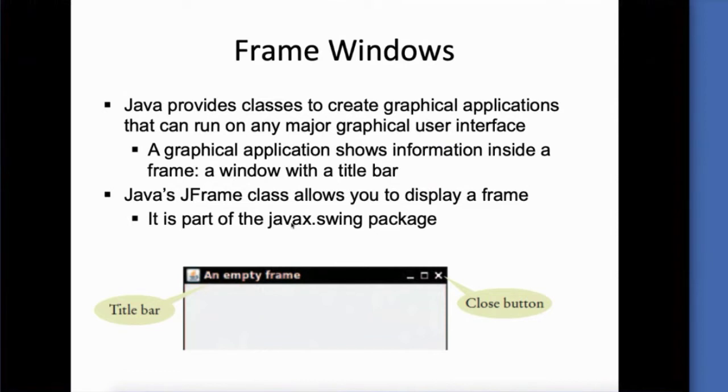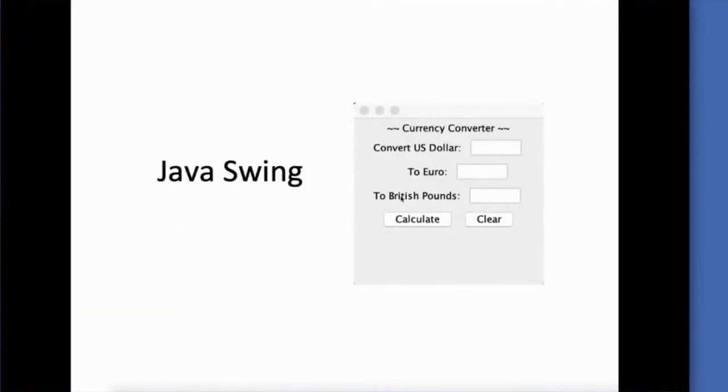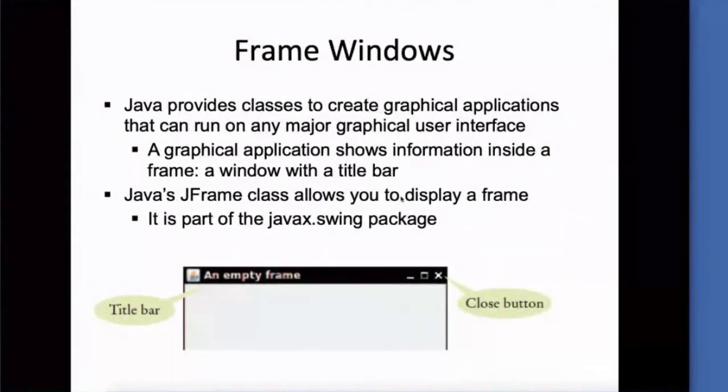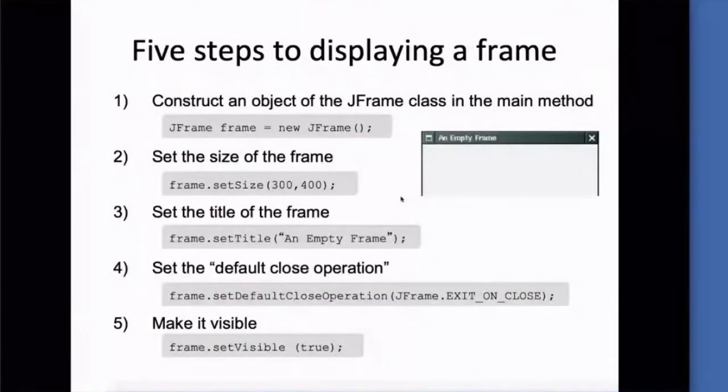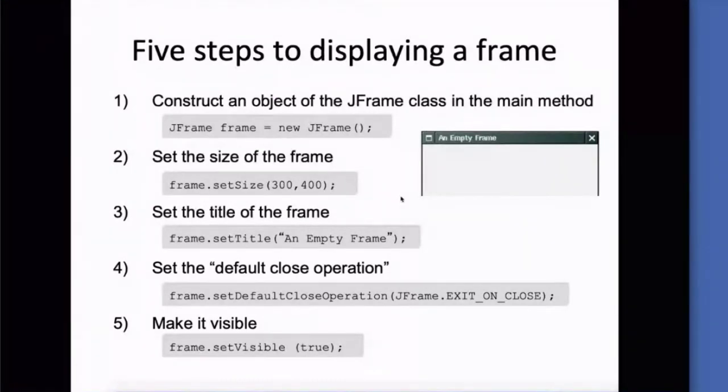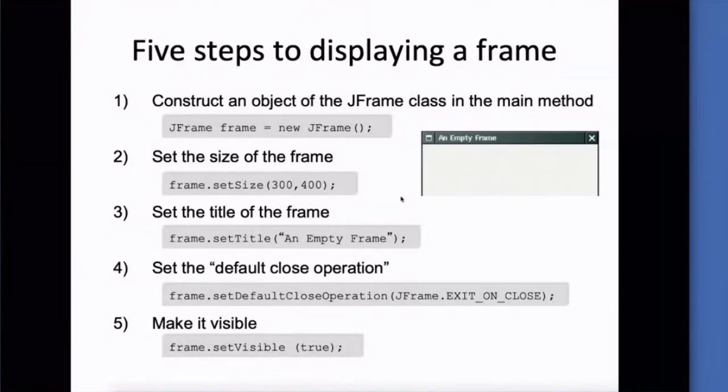A JFrame is an application window that pops up, much like this one right here will pop up, and allows us to start creating our interface. There's five basic steps to making a blank frame display. These would all go into a main method. First thing we do is declare and initialize a new JFrame. We set the size. We can add a title or not. And then we set a default close operation.